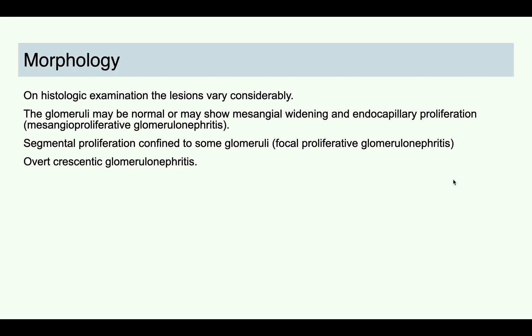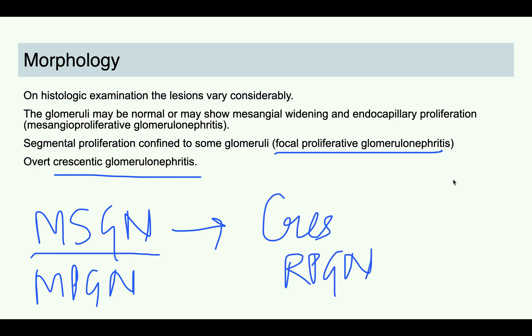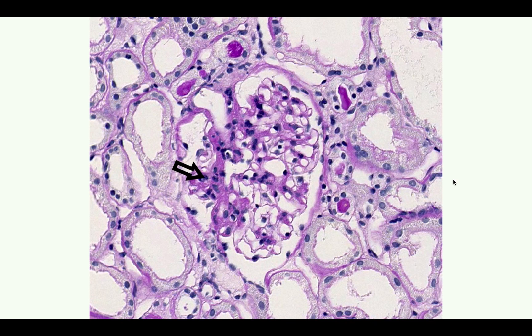Going to the morphology: the morphology will vary according to the stage and progression of the disease. The histological presentation changes as the disease progresses. You can have mesangioproliferative glomerulonephritis (MSGN), or it can present as MPGN. The patient can also go into focal proliferative glomerulonephritis, and lastly the person can go into crescentic glomerulonephritis, that is RPGN. As RPGN has a poor prognosis, patients with this morphology will have a poor prognosis. On light microscopy at the earlier MSGN stage, you will see proliferation in the mesangium — mesangial cells are increased.